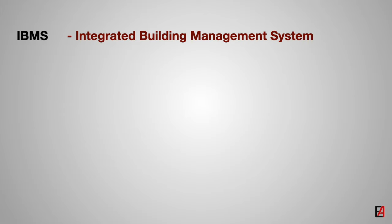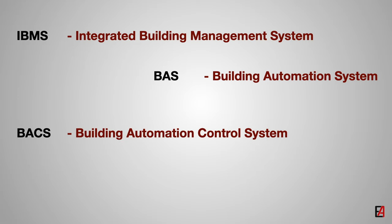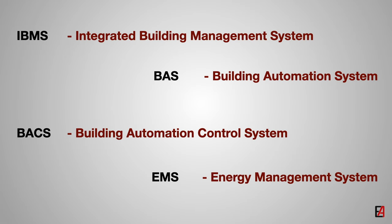BAS stands for Building Automation System. This is a standalone system without any management functionality, typically with a DDC control panel and handheld operating terminal. BACS stands for Building Automation and Control System. This is similar to the building management system, but in some cases PLC controllers are used with a SCADA system. In some cases, BACS also controls fire and life safety systems. EMS stands for Energy Management System. When additional energy management functions are used in the BMS system, it is referred to as an energy management system. Such features are used in building applications.